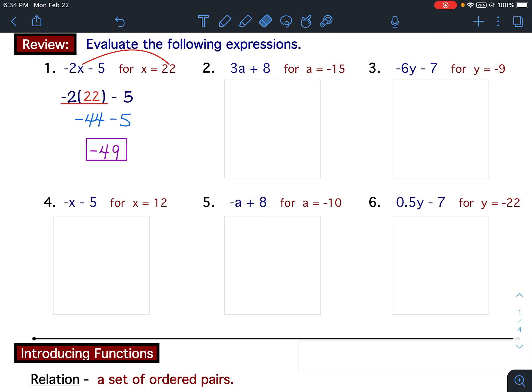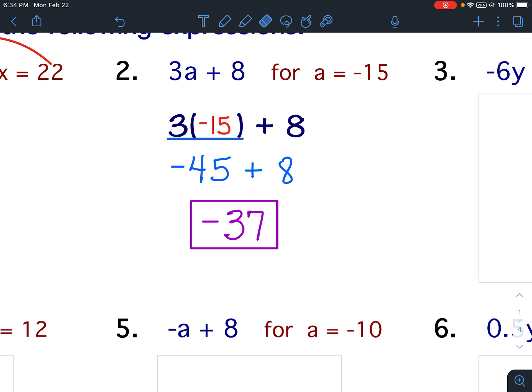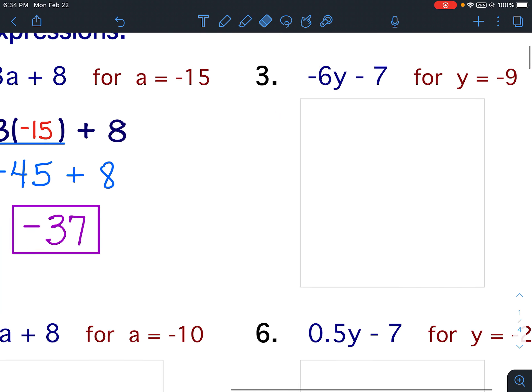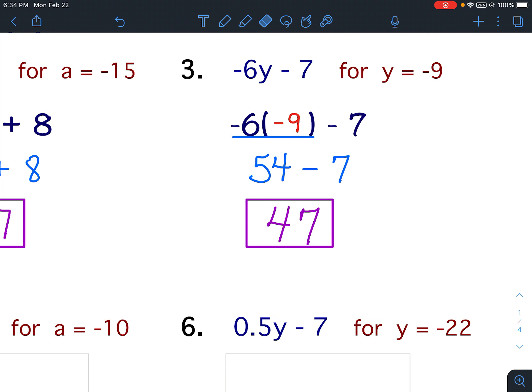For number 2, you should have substituted the negative 15 in for the a. 3 times negative 15 is negative 45. Negative 45 plus 8. Signs are different. Subtract. Keep the sign of the larger number, which would be negative 37. Number 3. Substitute the negative 9 in for y. Negative 6 times negative 9 is positive 54. 54 minus 7 is 47.